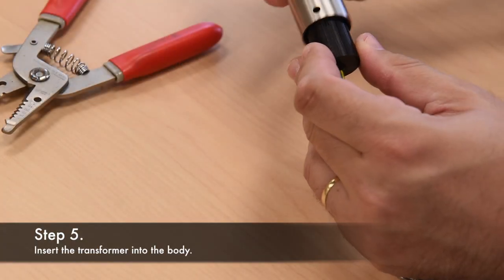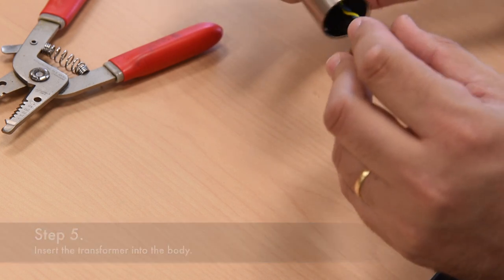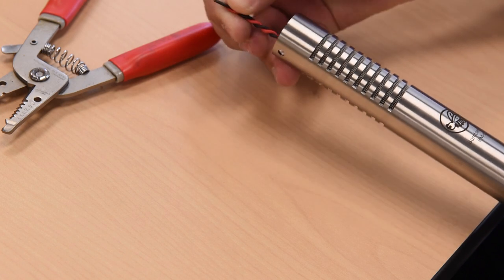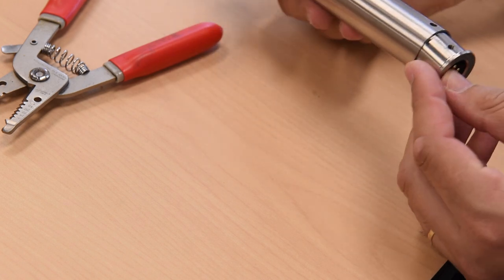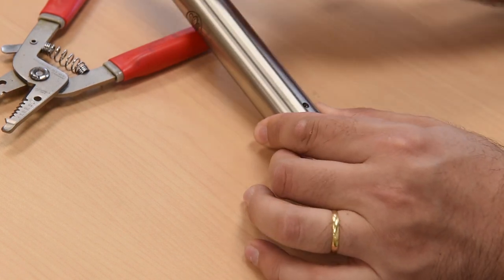Next, insert the transformer into the microphone body from the bottom. The red and black wires will extend through the top where you will connect the ribbon motor. Line up the bottom XLR cap with the body screw holes and insert the screw and fasten it firmly.